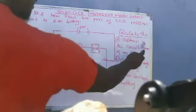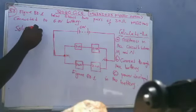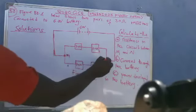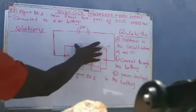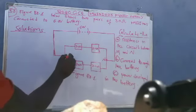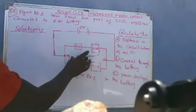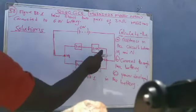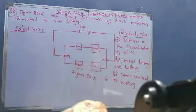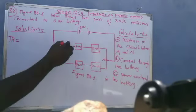The first question demands us to calculate the resistance in the circuit between M and N. So the total resistance between M and N — all these resistors fall between M and N, so we consider the total resistance of all these resistors in parallel.